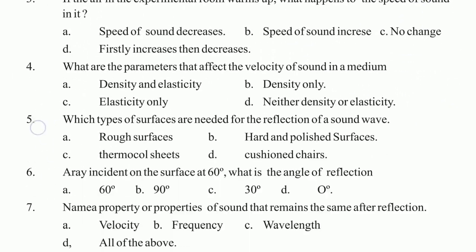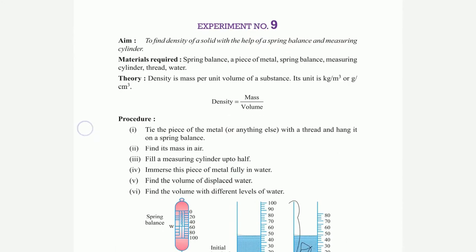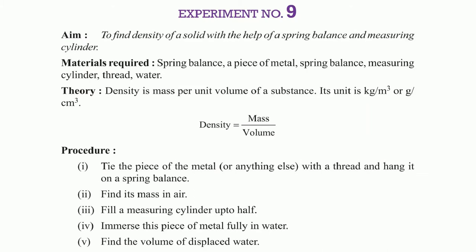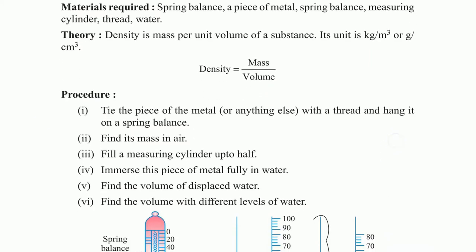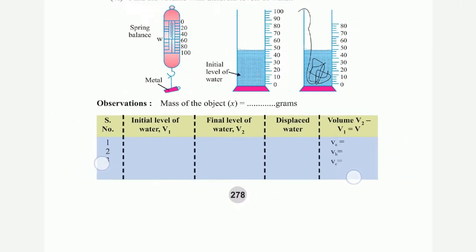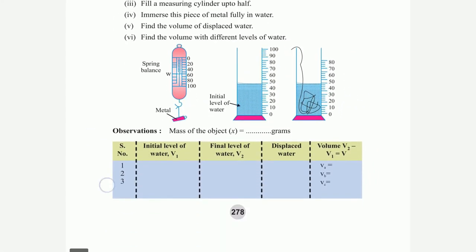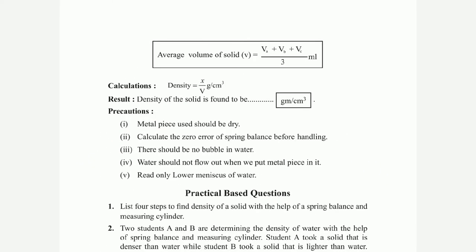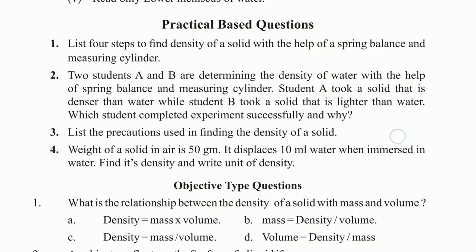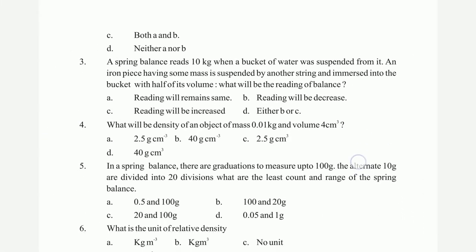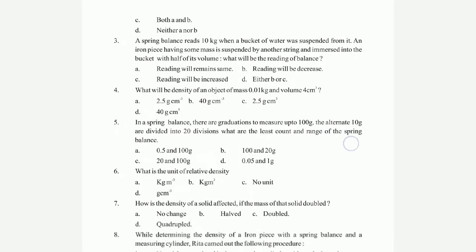Objective-based questions for experiment 8. Then experiment number 10: to find the density of a solid — mass divided by volume. Procedure, diagram, and formula for average volume of solid are shown. Practical questions and objective questions follow.